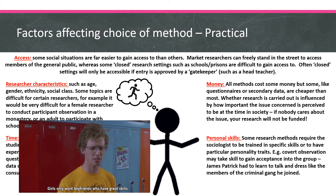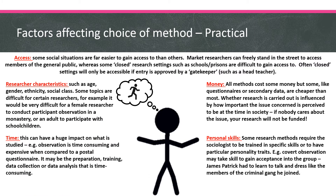And lastly, personal skills — your skills as a researcher, your ability to conduct a piece of research. You need to be trained in these skills. So if you want to do covert participant observation, such as James Patrick with the Glasgow gang, you would need the skills to get into that gang, a gatekeeper, time, and the right research characteristics. The easy way to remember these — time, research characteristics, access, money and personal skills — is the acronym TRAMP.